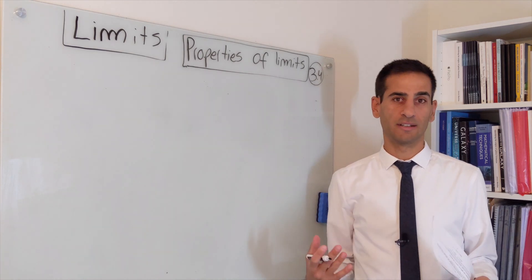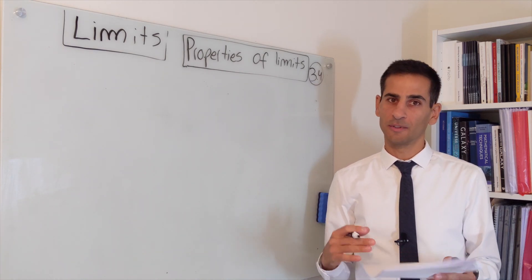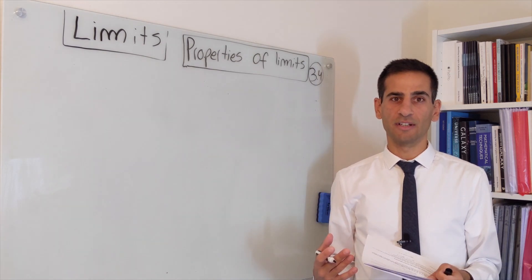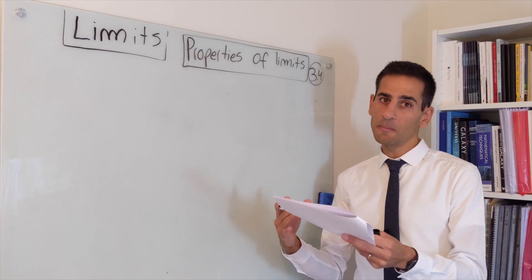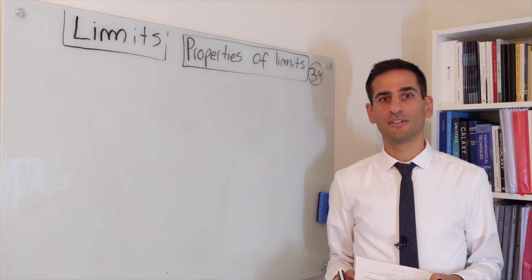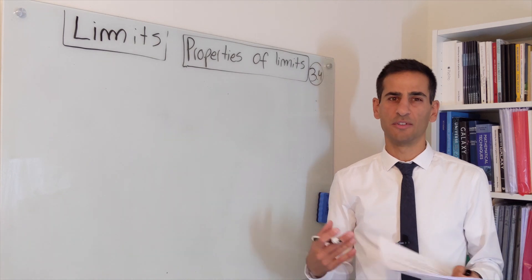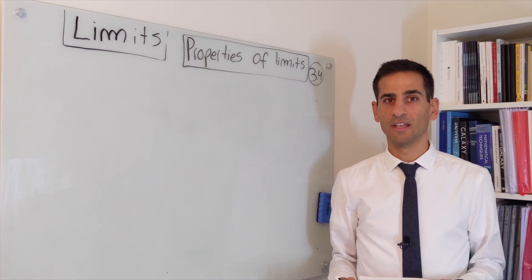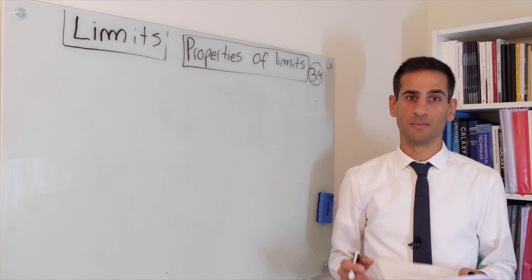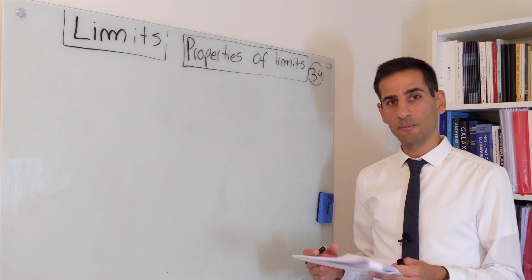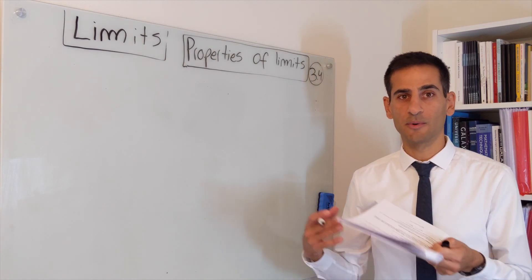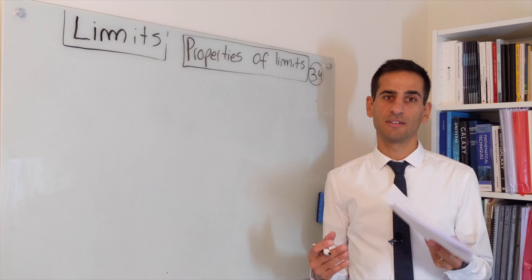If you're unsure, look at section 3.4, but basically these properties will cover what it means to take the limit of a sum of functions, the limit of a product of functions, quotients, or multiplying by a constant. It turns out that limits are very nicely behaved, which is great, and these properties also feed into — or propagate to — the properties of derivatives.